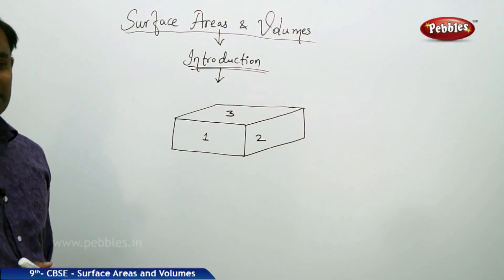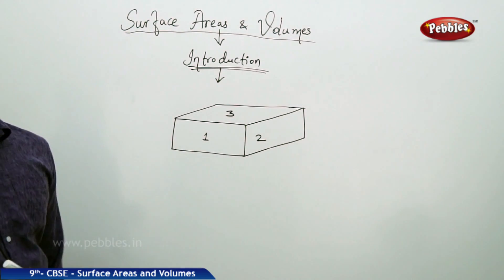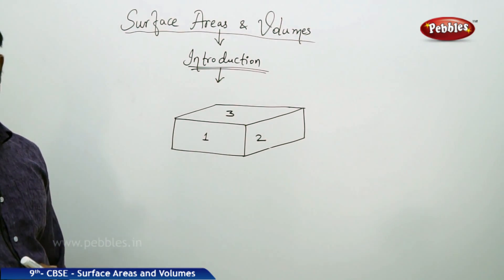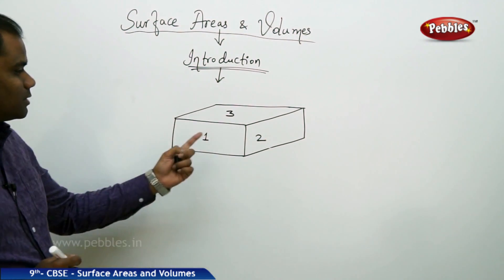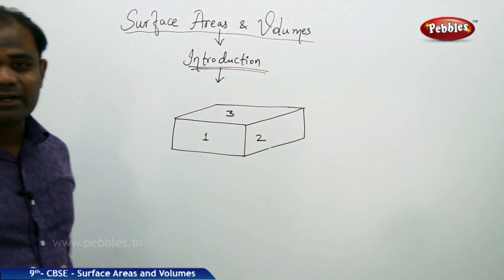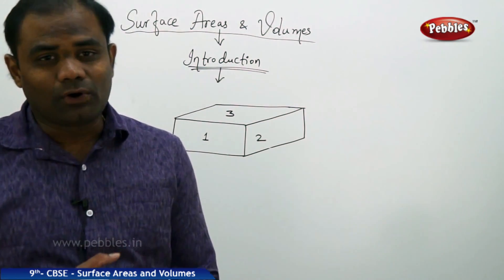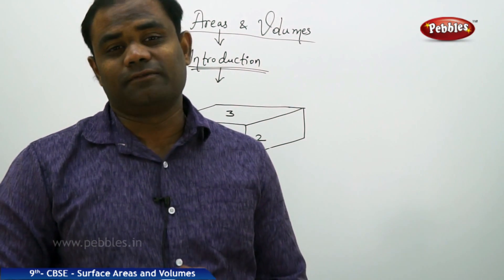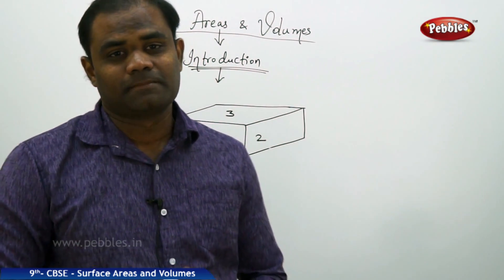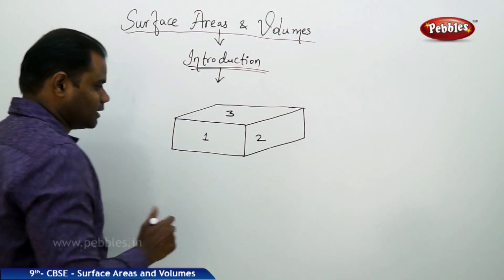There are totally six faces — Face 1, 2, 3, 4, 5, and 6 at the bottom. Each of the faces has its own area, assumed to be a rectangle. So surface area is the area of each face of the solid figure.